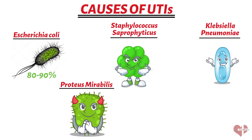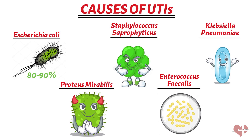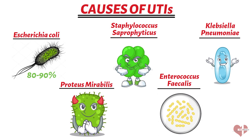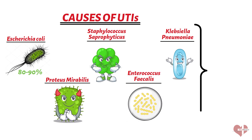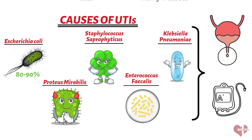Proteus mirabilis is more common in men than in women. Enterococcus faecalis is a type of bacteria found in the intestines and can cause an infection in the urinary tract. It is more common in people who have had a catheter or other medical procedure involving the urinary tract. These bacteria can enter the urinary tract in a number of ways — most commonly through the urethra, or from the bloodstream or other parts of the body.